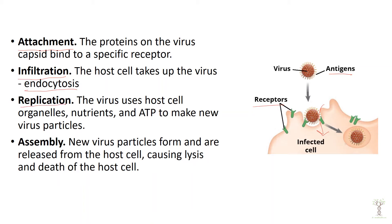Then the virus has to replicate — it's going to use all of the host cell's nutrients, energy, amino acids, and everything it needs. Viruses can never replicate outside of a cell. The last step is assembly, where new virus particles are formed and then released from the cell. The virus will break open the cell and kill the host cell in the process. Then all these new virus particles can go and infect nearby new cells.